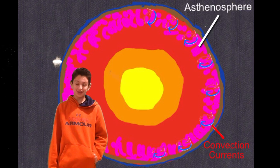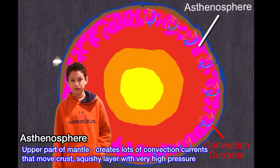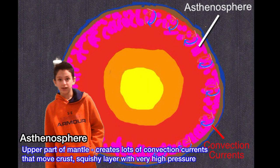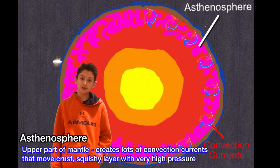Part of the upper mantle is the asthenosphere, which creates most of the convection currents in the mantle that move the crust. The asthenosphere is also a squishy layer that has very high pressure as well.